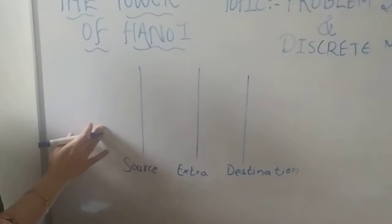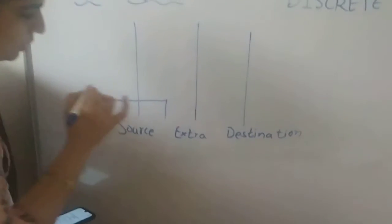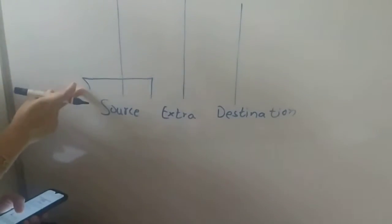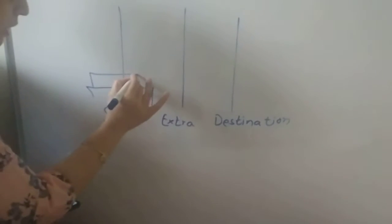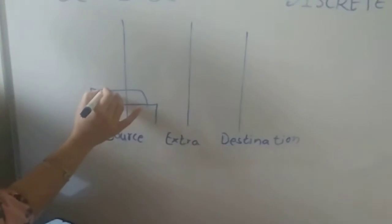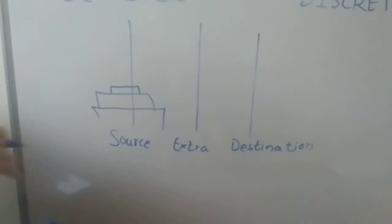Now what we have to do, suppose this is first disc, the larger one is at the bottom, then a little bit smaller is above it and again one disc is at the very top. Means three discs, four discs, five discs. The basic discs are at least three discs.